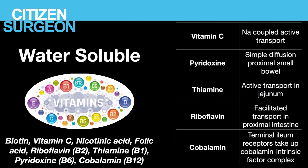Water-soluble vitamins are more varied in their absorption. Vitamin C is absorbed by sodium-coupled active transport in the small bowel. Pyridoxine (B6) uses simple diffusion in the proximal bowel. Thiamine (B1) — important in wet beriberi and chronic alcoholism — is absorbed by active transport in the jejunum. Riboflavin (B2) uses facilitated transport in the proximal intestine. Cobalamin (B12) is absorbed with intrinsic factor in the terminal ileum — a clinically important one that comes up on tests. Remember: B12 combines with intrinsic factor in the stomach and travels to the terminal ileum where it is reabsorbed.